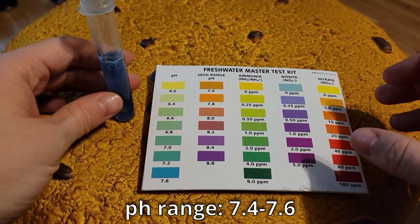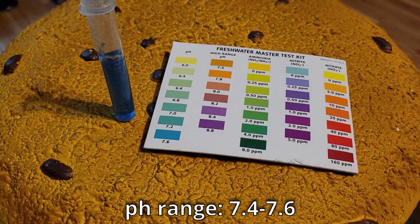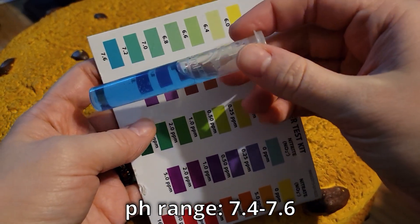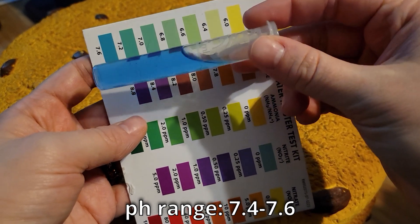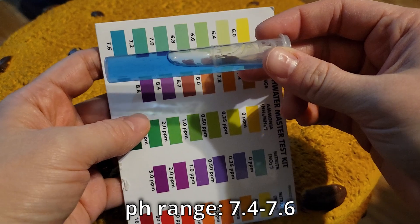This kit comes with the regular pH test and then a high range pH test. Mine is always like 7.4 so I don't need to use the high range pH test. If your numbers were showing darker than what's on the chart, then you can use the high range pH.